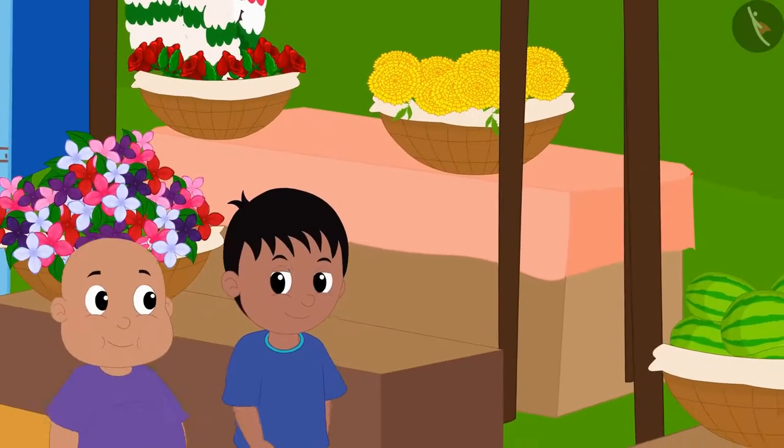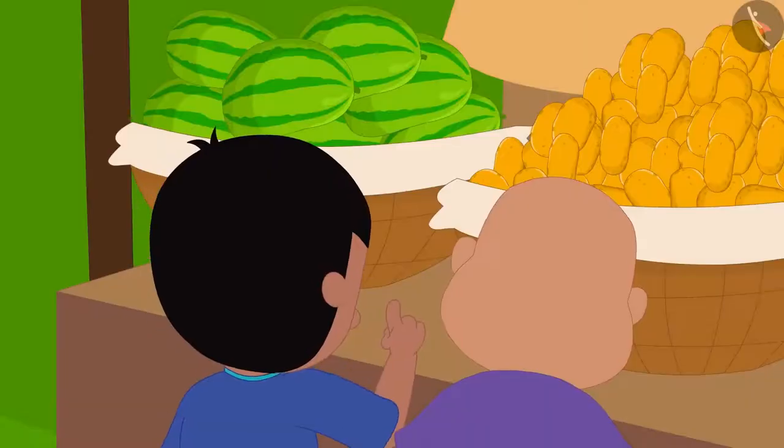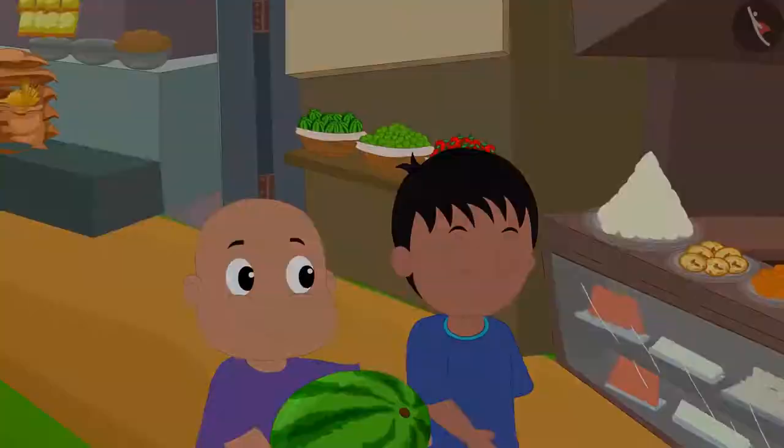Raju and Bablu are going to buy watermelon from the market. They bought a watermelon from Bunni's stall and took it to Raju's house.